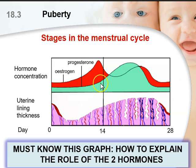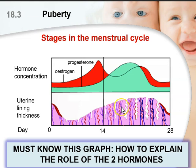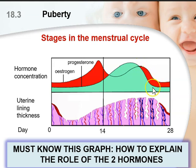After day 14, progesterone starts to increase and estrogen decreases, because progesterone is involved in further thickening of the uterine lining, making it thicker and spongy with blood vessels to prepare it for implantation. After day 14, which is ovulation — the release of a mature egg — there is a very high chance of fertilization. If fertilization does not occur, both hormones will decrease to a very low level, causing the uterine lining to disintegrate since the egg has not been fertilized.